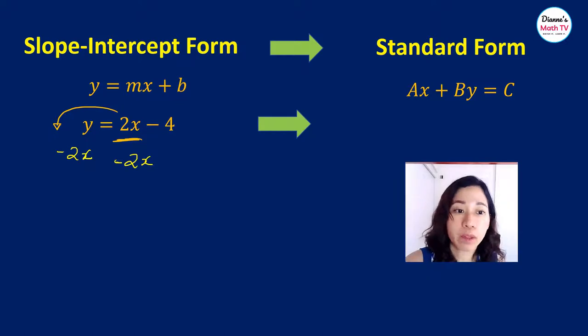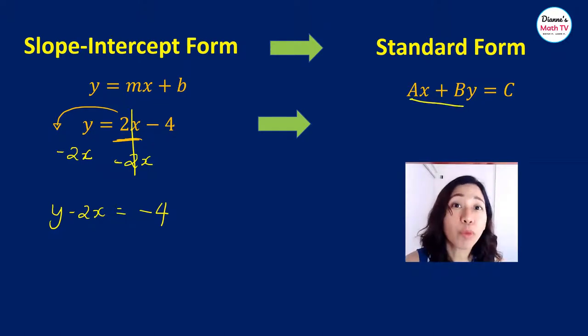So 2x minus 2x is zero. On one side, I now have y minus 2x equals negative 4. Now, recall that in our standard form, the term with x appears first. So I will just write y minus 2x as negative 2x plus y.